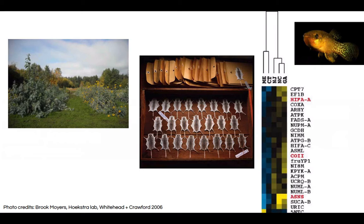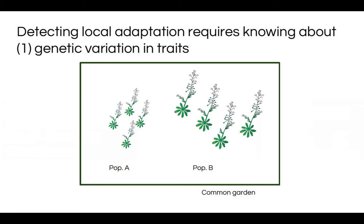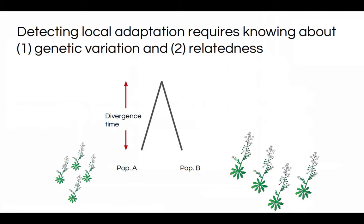Because there's been a long history of asking these kinds of questions, we have a lot of methods developed for understanding whether the variation we see in natural populations is consistent with drift or with selection. These methods generally require two pieces of information. First, we have to know whether the variation we see is genetic — traditionally, scientists will grow individuals from different populations in a common garden. In addition, it's important not only to know whether there is genetic variation, but to actually quantify it using VA, or additive genetic variation, traditionally done using crosses to get individuals of known relatedness.